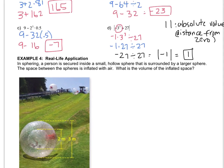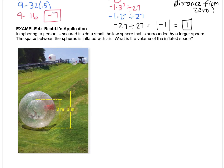All right, last example together. In sphering, a person is secured inside a small hollow sphere that is surrounded by a larger sphere. The space between the spheres is inflated, so that's this space here, and the person is in here, so they're rolling down this hill while the ball is rolling. What is the volume of the inflated space? Now you can look up the formula for the volume of a sphere. Here it's 4 3rds pi r cubed.